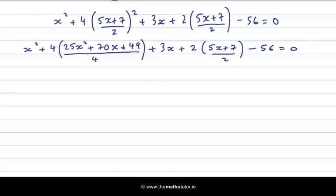Plus my 3x plus 2 times 5x plus 7 over 2 minus 56 equal to 0. Now, there's a little bit of cancelling can be done. I can cancel my 4s here and here and I can cancel my 2s here and here.